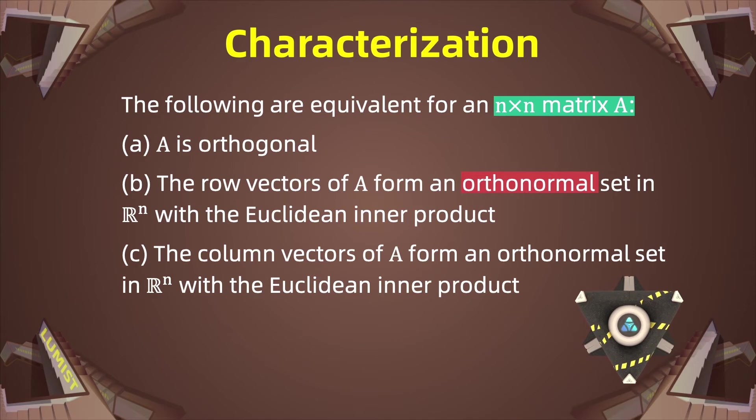This is equivalent to the following. The column vectors of A form an orthonormal set in Rn. Again, the columns of A must be orthonormal. Excellent. Any of those conditions characterize that A is orthogonal.